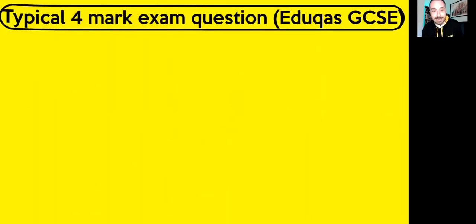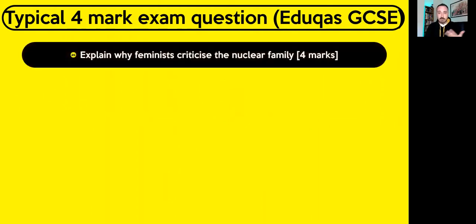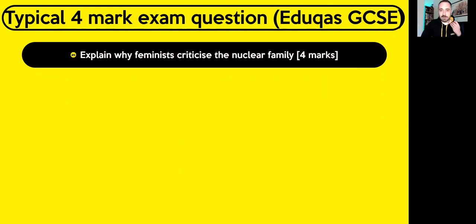Those are four ways we can criticise the role of the family in society. I'm now going to give a four-mark exam question. If you don't take the Educast GCSE, you'll want to skip forward here. Here's a very typical four-mark exam question from the family section: explain why feminists criticise the nuclear family.